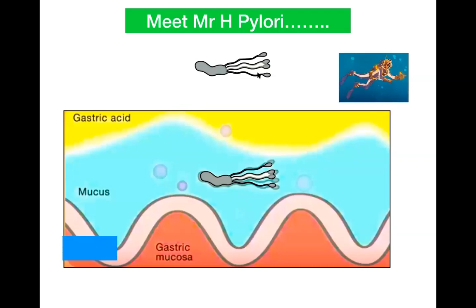Now let's meet H. pylori. H. pylori is like a swimmer who likes to swim in the sea of mucus secreted by the gastric epithelial cells — it is like a deep-sea diver, present within the mucin pool of the gastric crypts. To identify H. pylori, they should be looked for specifically in the gastric crypts, where they will be present in multiple numbers within the crypt epithelium. They stay nearer to the epithelium because they float in this sea of neutral mucin, which protects them from the acidic milieu of the gastric lumen.